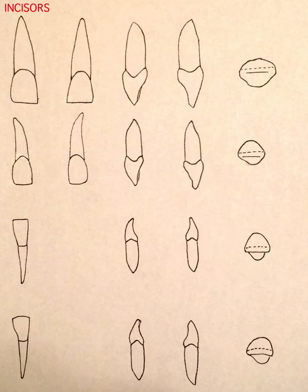Its proximal contacts on the mesial side are in the incisal third, and on the distal side at the junction of the incisal middle thirds. We have two developmental depressions that separate the three facial lobes, the middle lobe being the most prominent, most convex.